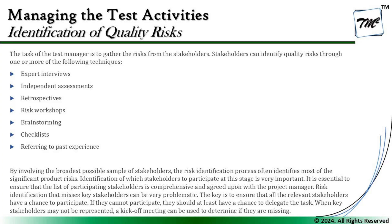By involving the broadest possible sample of stakeholders, the risk identification process often identifies most of the significant product risks. It is essential to ensure that the list of participating stakeholders is comprehensive and agreed upon with the project manager — meaning the project manager understands and confirms that this is the team needed. The broadest range of people means inviting every single person who has any kind of stake, as we discussed when identifying stakeholders at the beginning of the chapter.